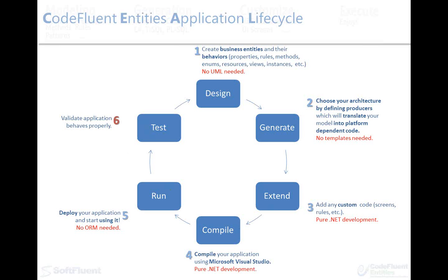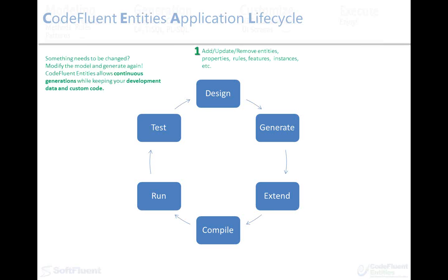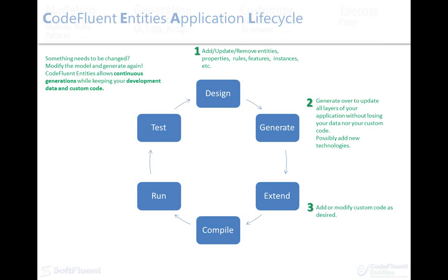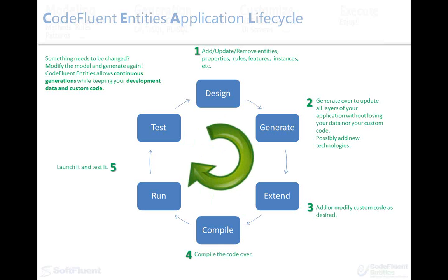Those few steps from Extend to Test are in fact a sub-cycle in the application and can be repeated as much as needed. However, if ever a structural change is needed — like adding an entity, renaming one, removing columns, or whatever else — you're going to have to go back to the model, update it, and generate over. Then you're off for a new cycle: modify custom code if needed, compile over again, test again, and so on.